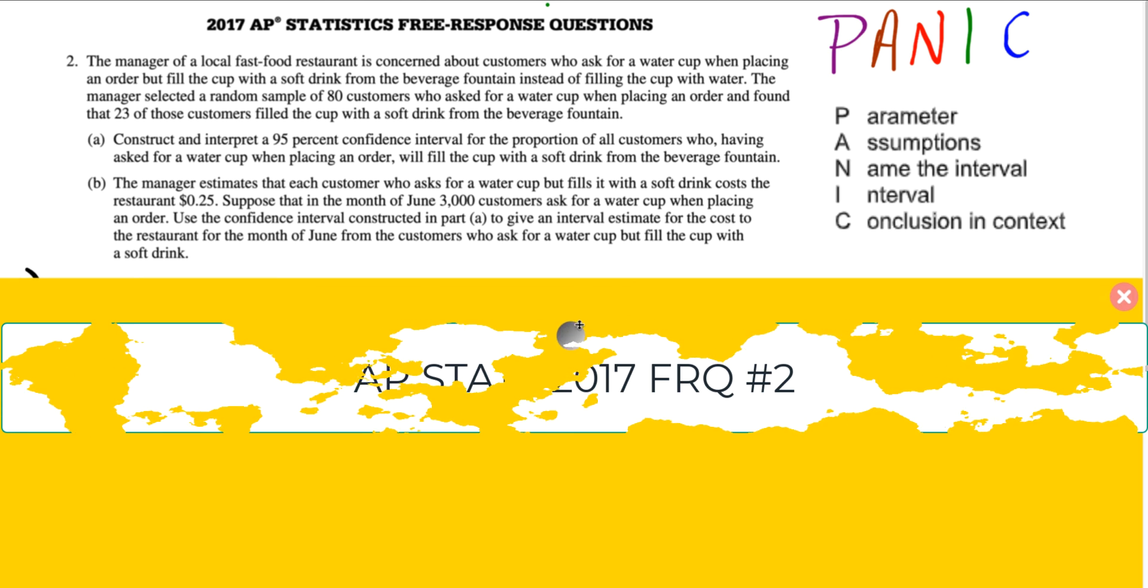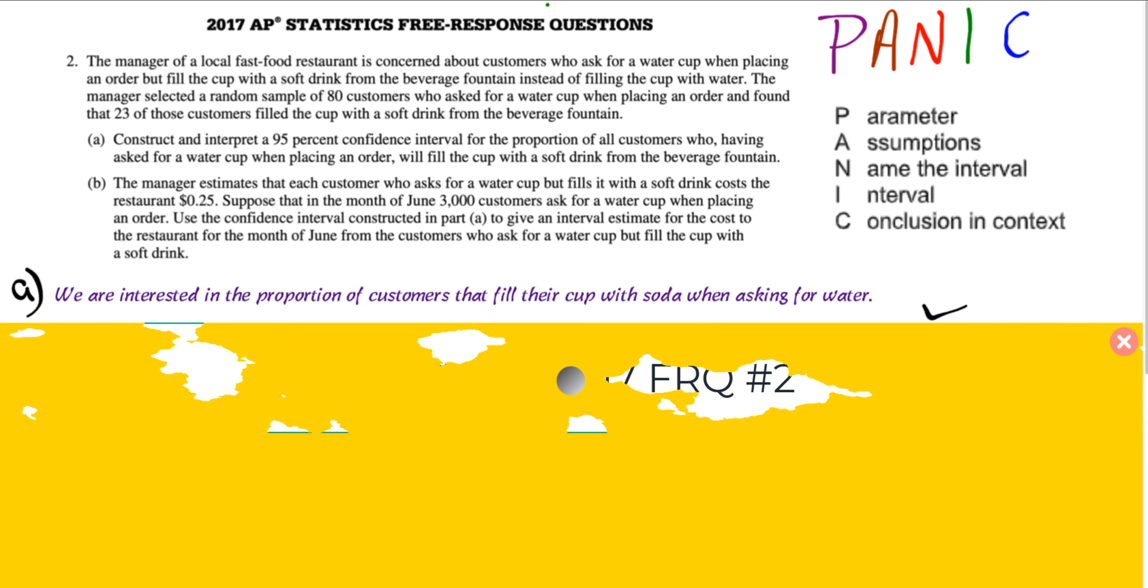So, if we go through all those different parts, then we will make sure that we have fully satisfied what it takes to construct and interpret a confidence interval. So, let's get started with this problem here. Starting with a P. We're interested in the proportion of customers that fill their cup with soda when they ask for water. That's what this question is about. Of all the people who ask for a cup for water, what proportion actually gets soda? So, that's what we're interested in.